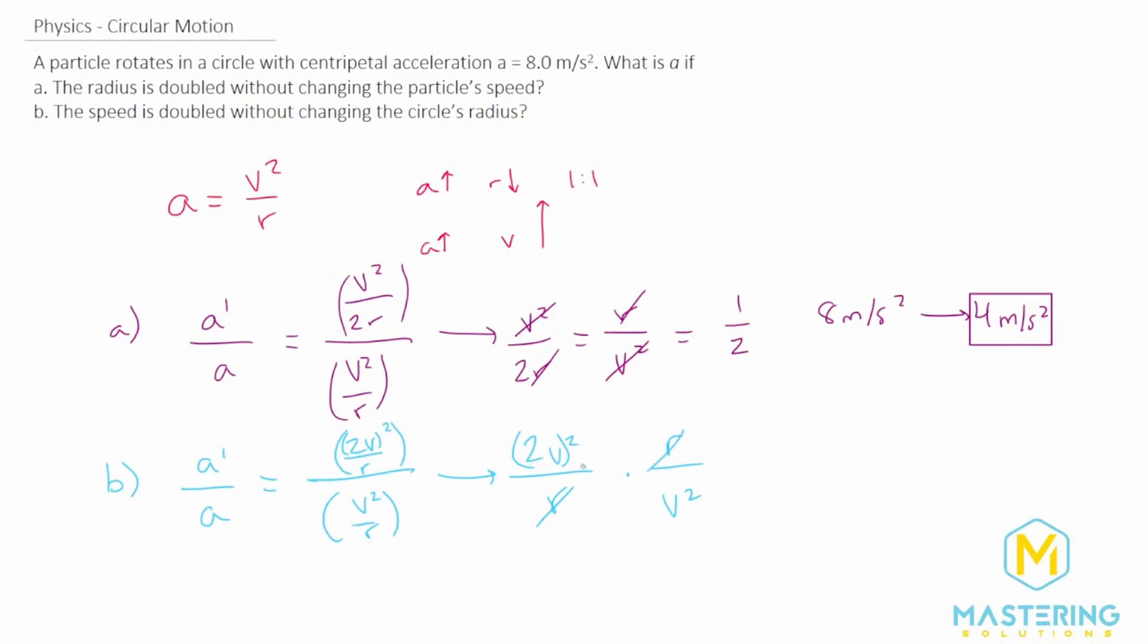Those will cancel, and we need to carry over the square. So we'll have 4 times the velocity squared. Now the v squared will simplify.